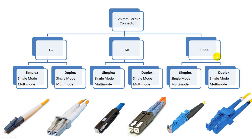Another major type is called E2000, also known as the LX5 connector. It looks like an LC connector with a shutter over the end of the fiber. E2000 connectors are available in simplex (single fiber) and duplex (two fiber) versions. Both types have single-mode and multi-mode fiber versions available.